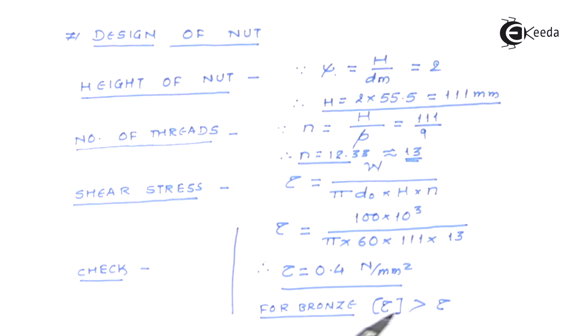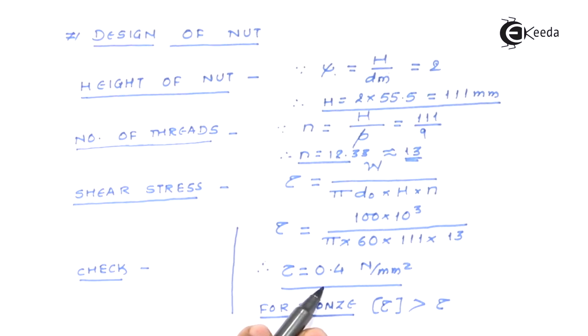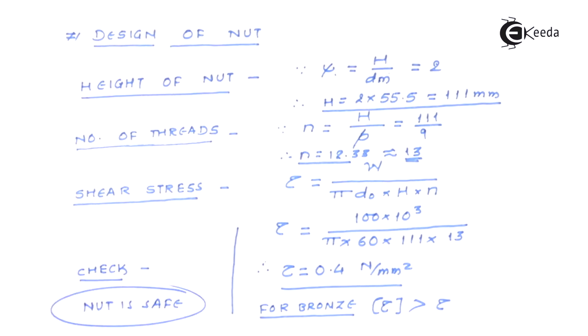And hence we can say that you can verify this, cross verify this value from the design data book. There you will find that this value allowable value is greater than the value which we have obtained and that's why I can say that nut is safe in the given condition.